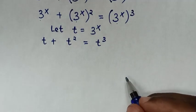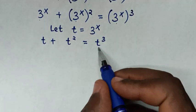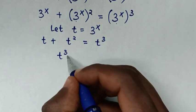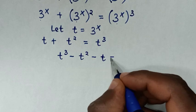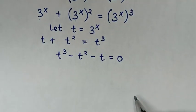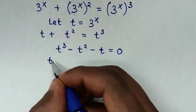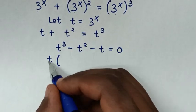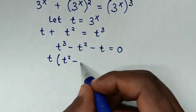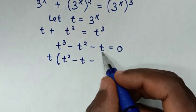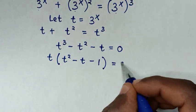In the next step, we rearrange to one side: t cubed minus t squared minus t is equal to 0. Then t is common, so we take t out of the bracket, giving t times (t squared minus t minus 1) equals 0.